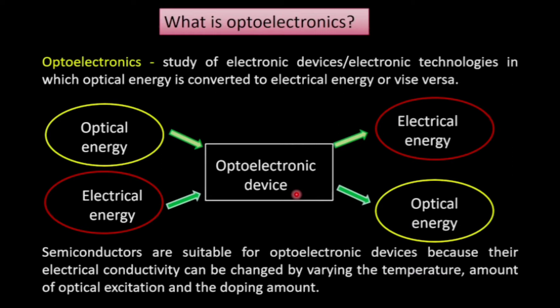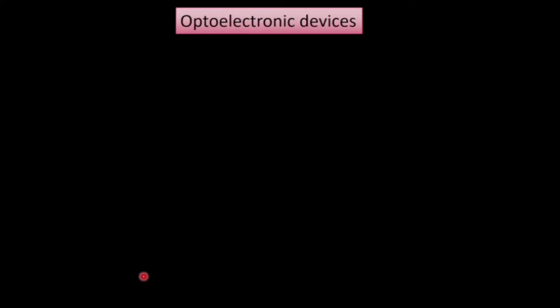Furthermore, if we change the doping amount in the semiconductor, that will also change the electrical conductivity, as we have already discussed in semiconductor physics. Since electrical conductivity can be controlled through different parameters, semiconductors are the most suitable material for designing optoelectronic devices.